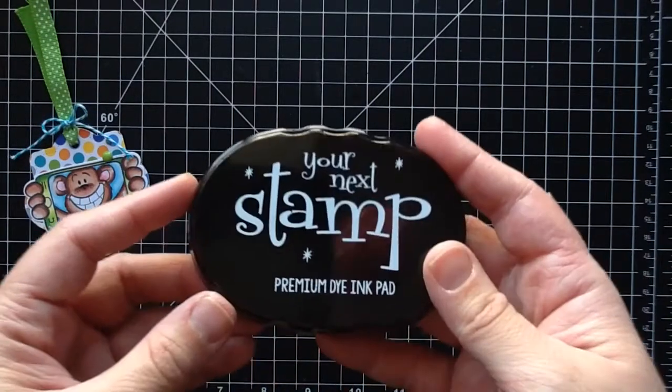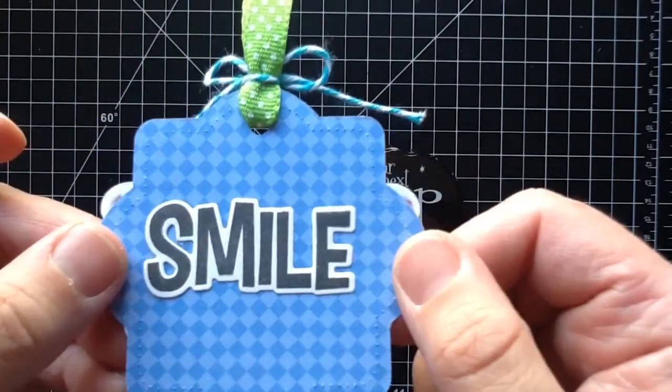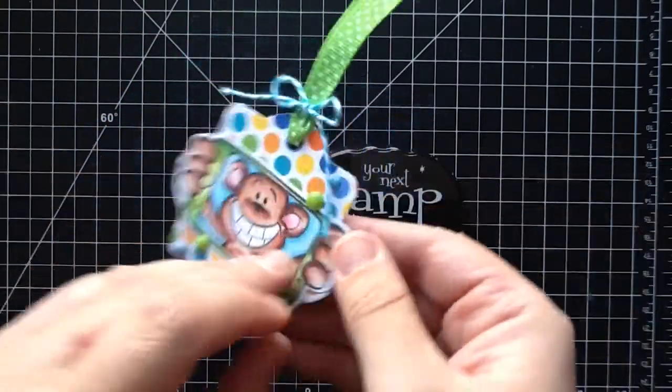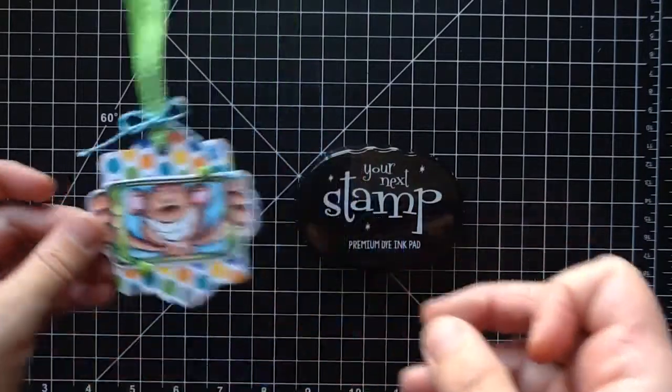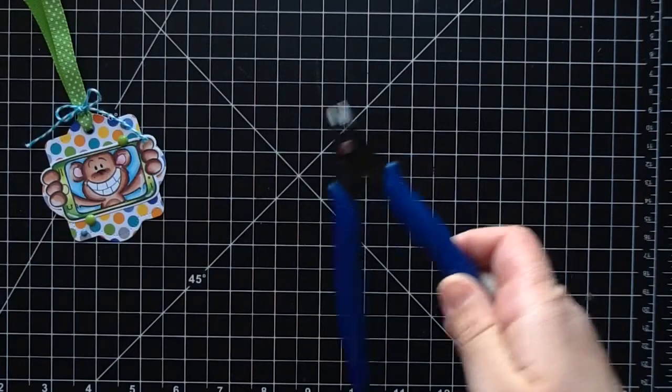I'm going to start out by sharing the products I used. First of all, I used this Your Next Stamp Black Olive Ink, and I always talk about how it's my favorite. You can really see here how dark and crisp that image is, and how nice the thick lines from the stamped image came out with that gorgeous ink.